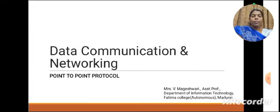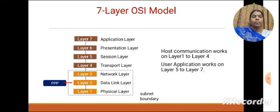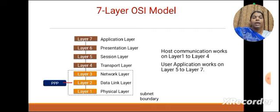In this session we are going to see about Point-to-Point Protocol in data communication and networking. Point-to-Point Protocol plays a very important role in the OSI reference model, which has seven layers: physical layer, data link layer, network layer, transport layer, session layer, presentation layer, and application layer. Layers 1 to 4 are meant for host communication, and layers 5 to 7 are meant for user applications.